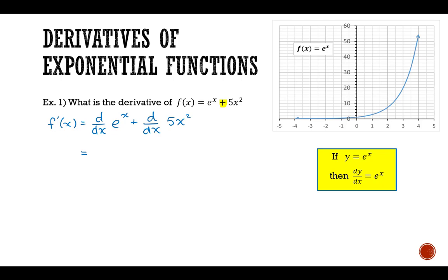Now the derivative of e to the power of x is itself. It's e to the power of x. And then the derivative of 5 times x to the power of 2 is simply 5 times the derivative of x squared, which is 2x. This gives me my first derivative of e to the power of x plus 10x. And there is my final answer.